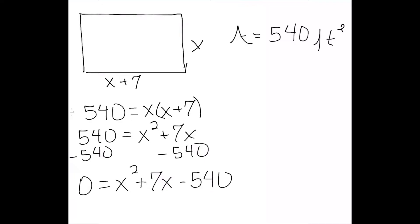And this equation actually does factor. It factors into x plus 27, x minus 20. So that tells me either x plus 27 is equal to 0 or x minus 20 is equal to 0.